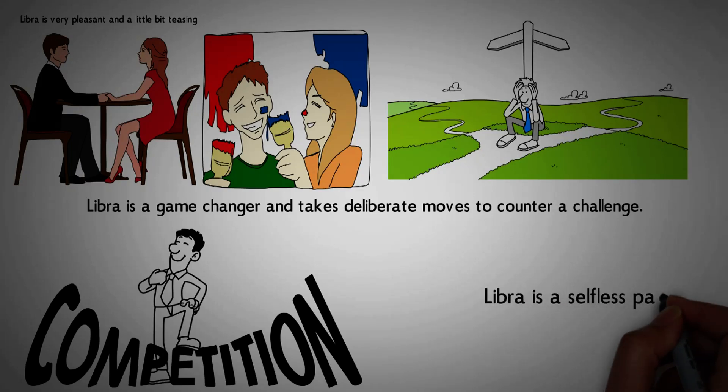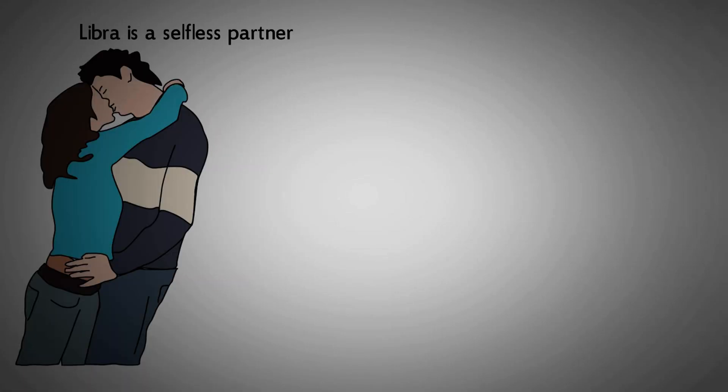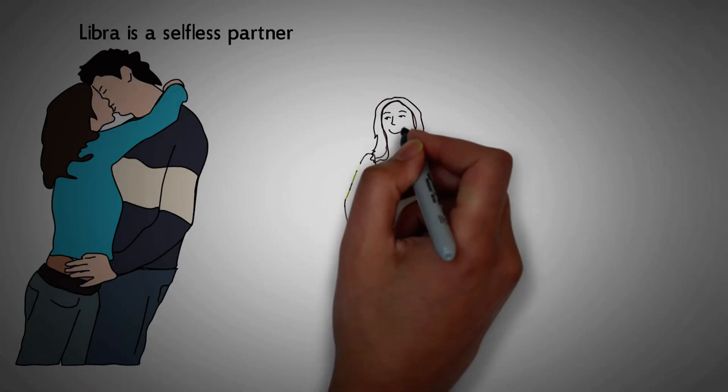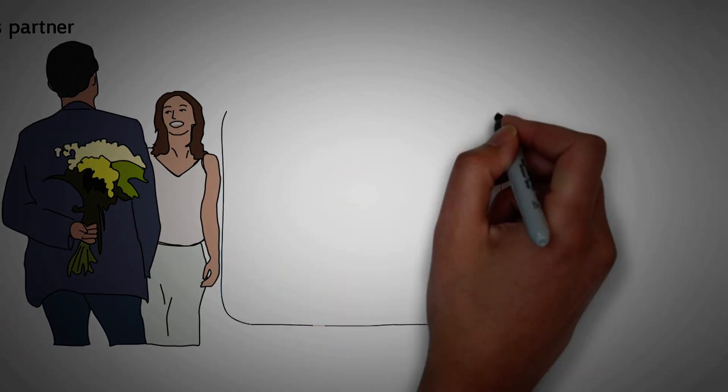Number 14. Libra is a selfless partner. Libra has plenty of love to offer to their partners. They look for a person who can offer the love and affection they deserve. They love unconditionally and expect nothing less from a romantic relationship.